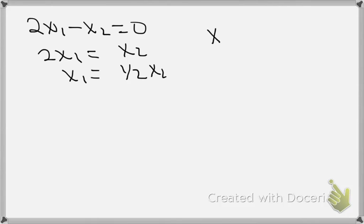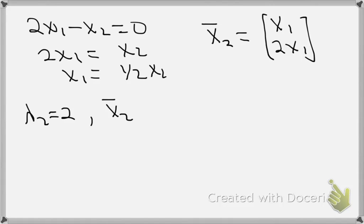So this vector x₂, since I'm talking about the eigenvalue λ₂, is going to be equal to [x₁; 2x₁]. If I factor out that constant, I'm going to get that for λ₂ = 2, my eigenvector is x₂, which is any multiple of the vector [1; 2]. So I've found my eigenvalue eigenvector pairs for this particular matrix.